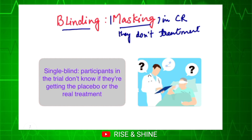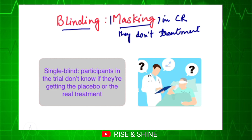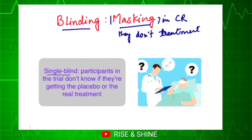Blinding can be of many types — most popularly single blind, double blind, or there are triple blind examples also. The most common is double blind, but before that we will try to understand what single blind is. In single blind, as the name suggests, only one party is blinded — the participants, or subjects, those who are participating in the trial, are kept blinded.